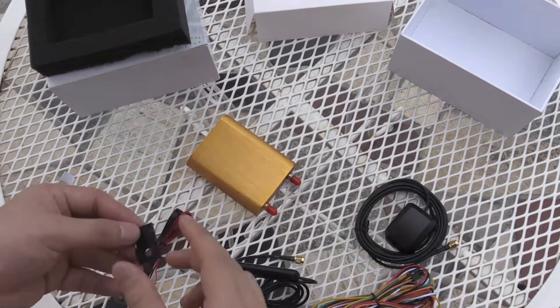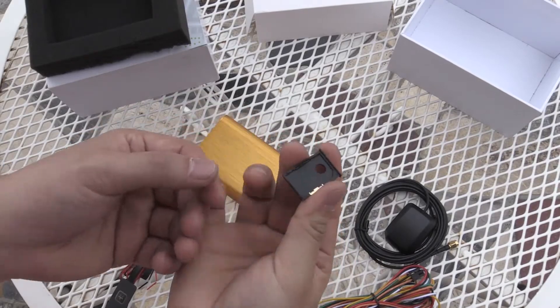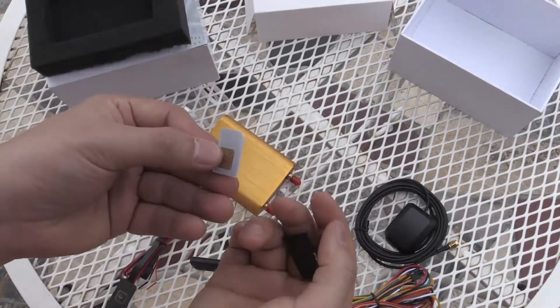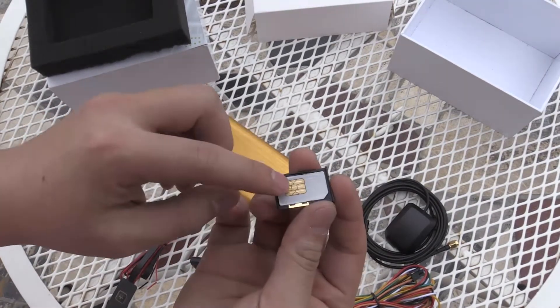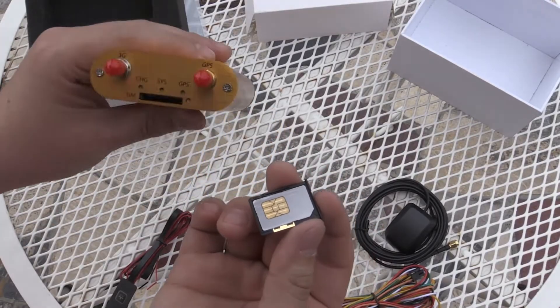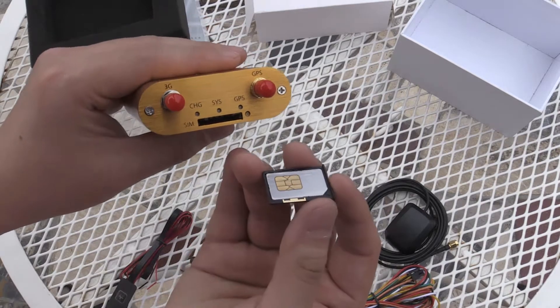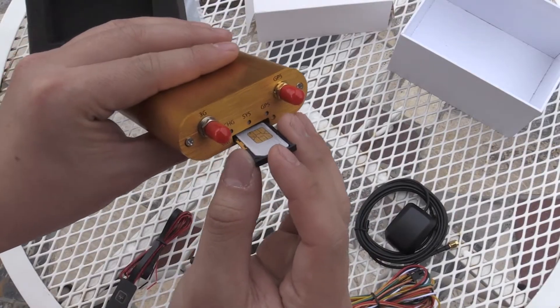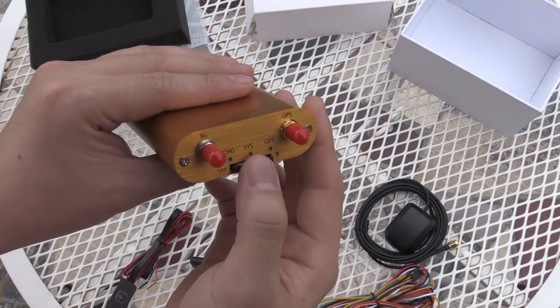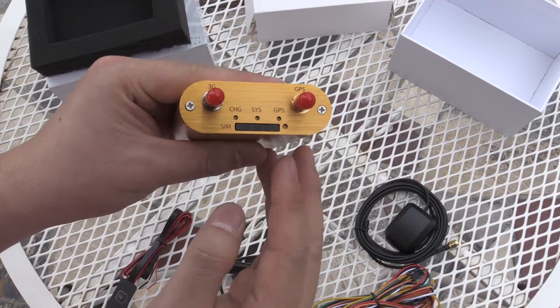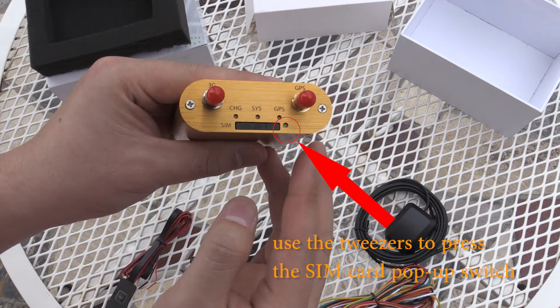How to set up the vehicle GPS tracker. One, SIM card installation. Power off the device before installing the SIM card. Insert the SIM card into the SIM card slot, ensure that the card chip is facing up. Put the SIM card slot back.